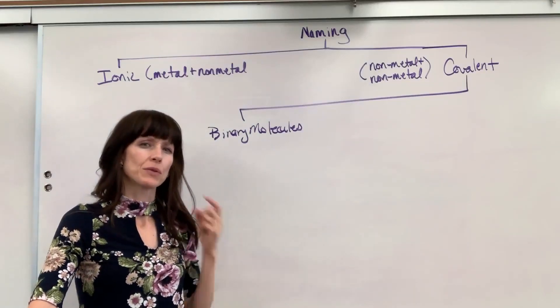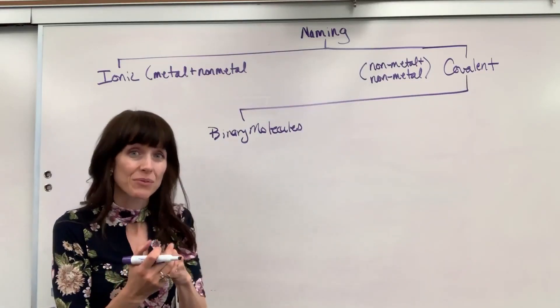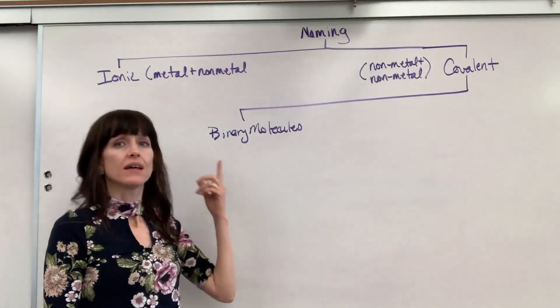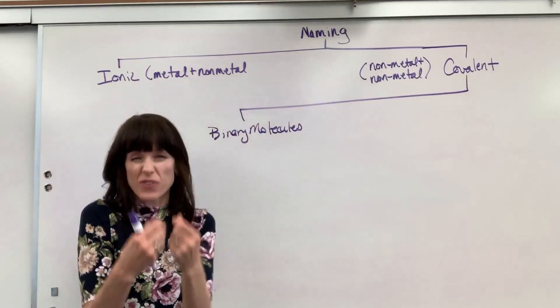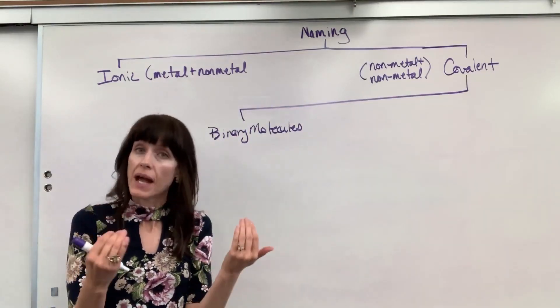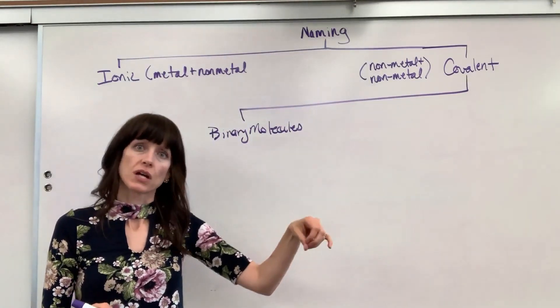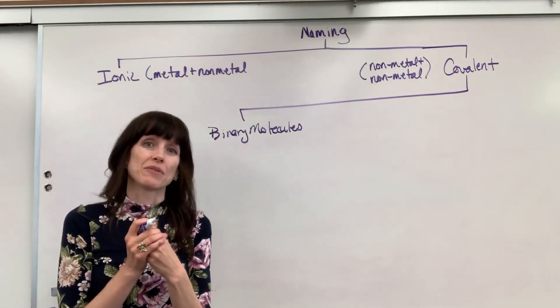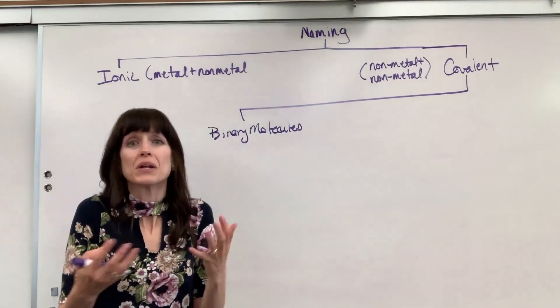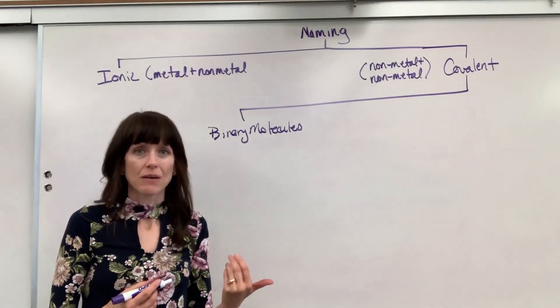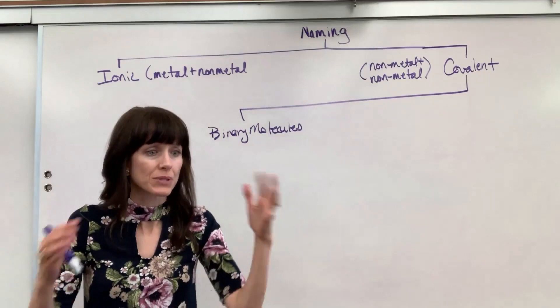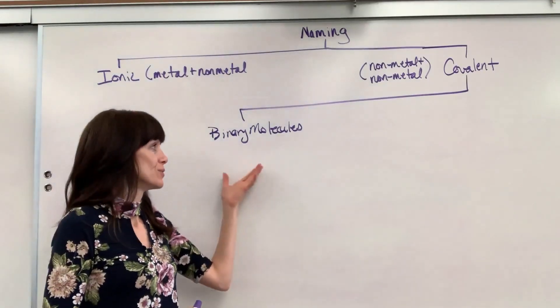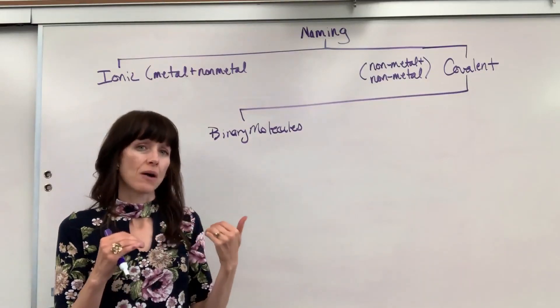The naming is going to be similar to ionic with one exception. We have to tell the reader how many atoms there are. And here's the reason why. In ionic, we can cross down charges and figure out the subscripts, how many atoms there are to make a net zero charge for that compound. Well, in molecular, it's a different type of chemistry. The atoms share electrons, and we don't know how many atoms there are. We have to be told. We can't predict it by just looking at the periodic table. So we use Greek prefixes to tell the reader the subscripts, how many atoms there are.